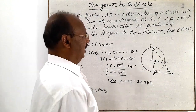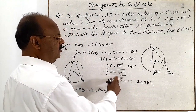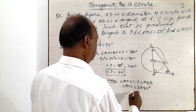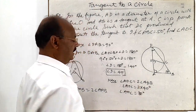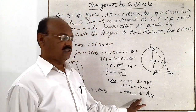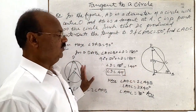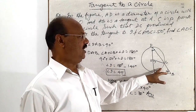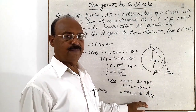Angle ADB is 40 degrees as we already found. Therefore, angle AOC equals 2 times 40 degrees, which is 80 degrees. So the answer is 80 degrees. The key property used is that the angle subtended at the center of the circle is twice the angle subtended by the same arc at the circumference.